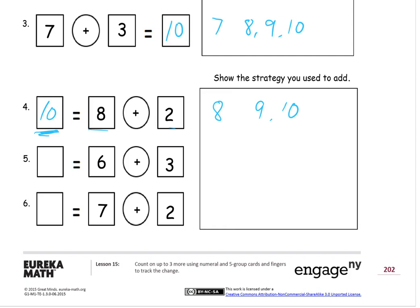And you don't have to use the same strategy I use every time. You can use whatever your favorite strategy is. If you like the five group cards, draw the five group cards. If you count on your fingers, then count on your fingers.